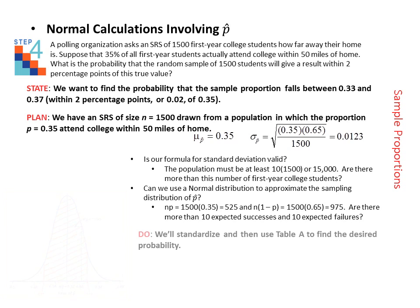In DO, we will actually standardize. In other words, we will find z-scores. And then you can use table A to find the probabilities that you need. So first we will find a z-score for 0.33 and then a z-score for 0.37.